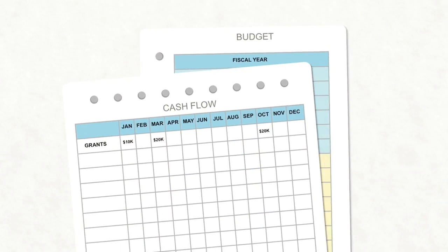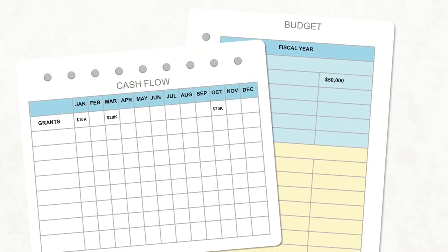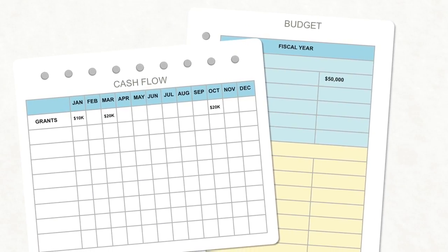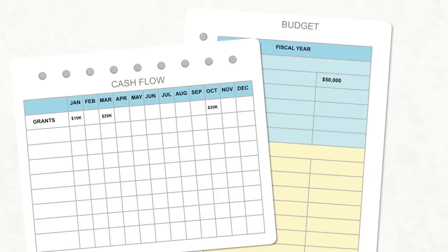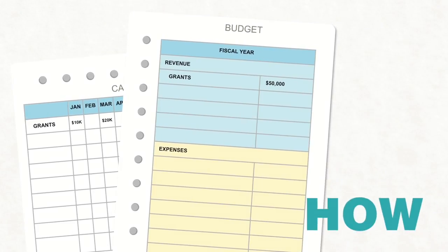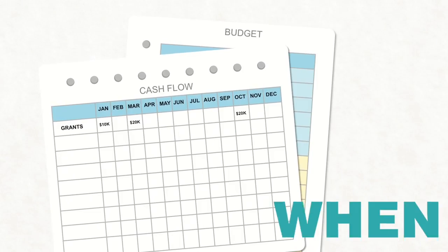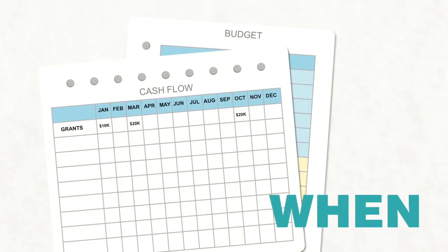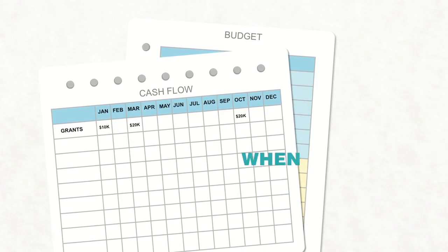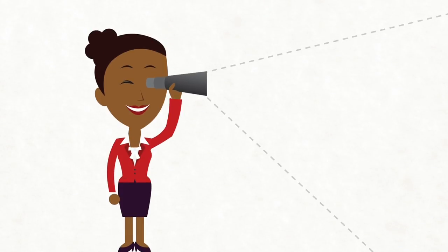First, it's important to understand the difference between your cash flow and your budget. Know that they are both critical to understanding your overall financial picture. Your budget is a plan for how you will earn money and spend money. Your cash flow is a record of when money comes into and goes out of your organization. In order to have cash when you need it, you'll need to create a cash flow projection system that works for you.